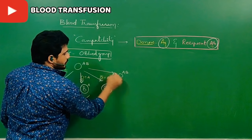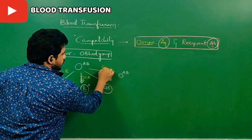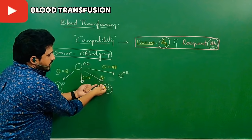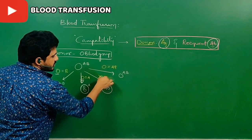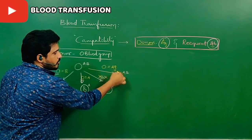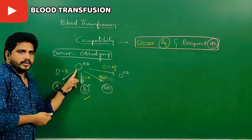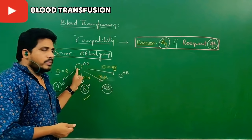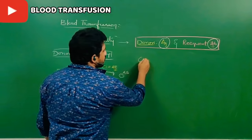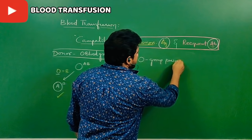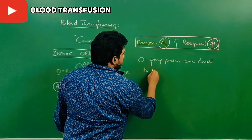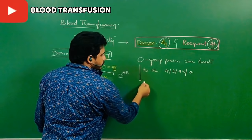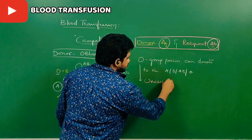If O blood group donates to O blood group: O donor has no antigens; even though antibodies A and B are present in the recipient, since there is no antigen coming in, there is no reaction. Conclusion: O blood group person can donate to A, B, AB, and O — all types of blood groups. That is the reason O blood group person is called the universal donor.